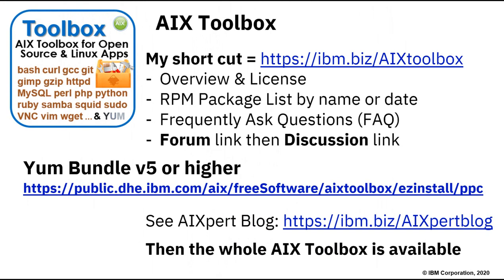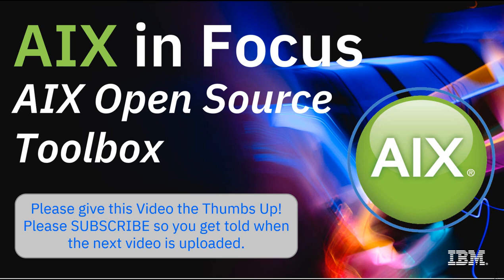A quick reminder to finish: use the shortcut ibm.biz/AIXtoolbox — there's the overview, licenses, packages by name or by date, frequently asked questions, and the forum if you want to ask questions or request new packages. When you want the YUM bundle, there's a URL to find it, and my AIX expert blog has a couple of YUM articles I've referenced in this video. The entire AIX toolbox — 813+ packages — is then available to you to download and use in seconds. That's it for this AIX in Focus video on the AIX open source toolbox. Hope you found it interesting and useful — please give it a thumbs up, subscribe, and click the alert button for future videos.